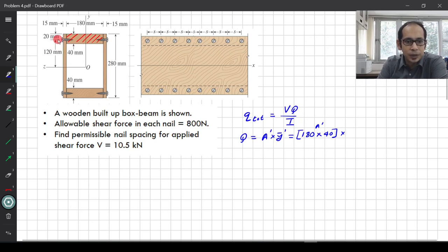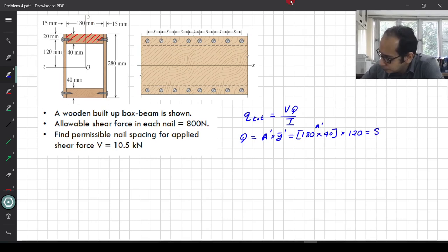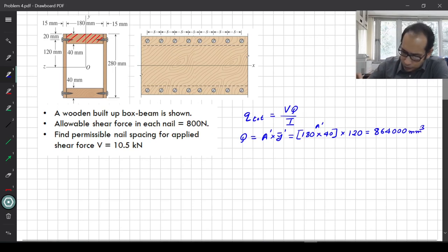Up to this central line you see it is even 120 mm. So it is going to be times 120. If you plug in the numbers in your calculator and you calculate it, you will get it as 864,000 meter cube. That is remember the Q with the unit of Q is the length times Q.